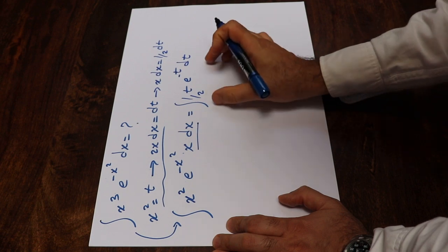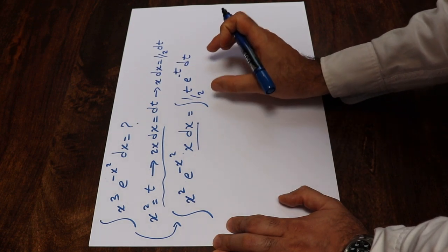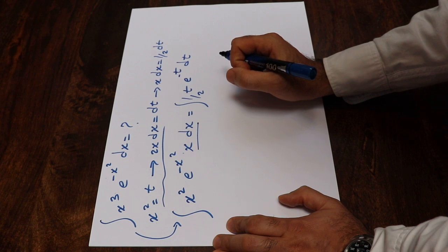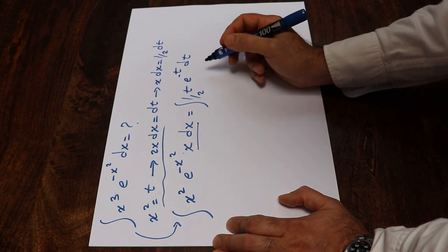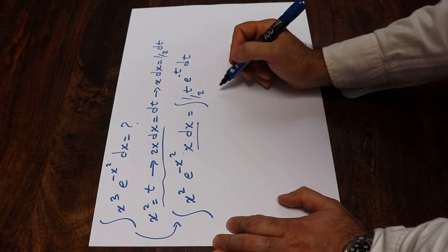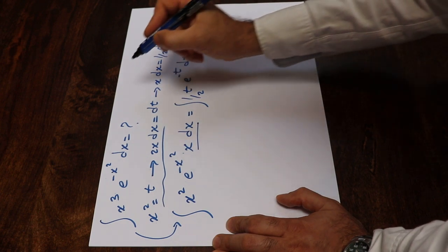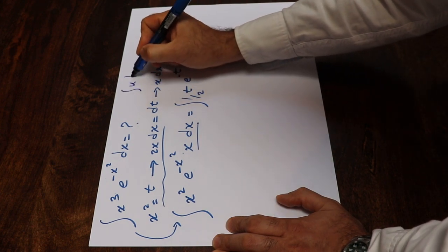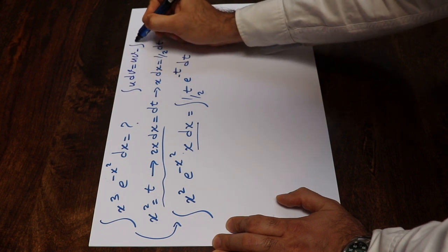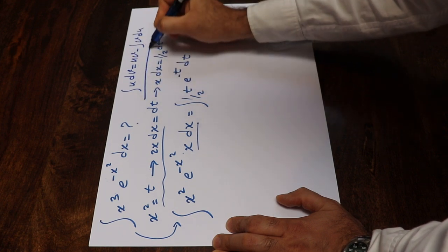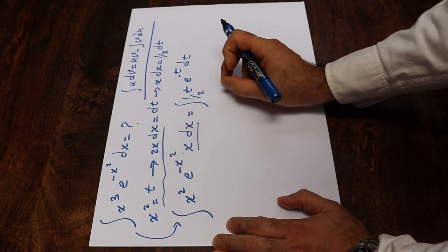So now you need to calculate this integral, and you can do so by using the formula for integration by parts. That is: the integral of u dv is equal to u·v minus the integral of v du.